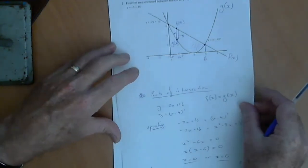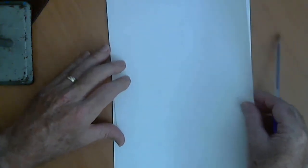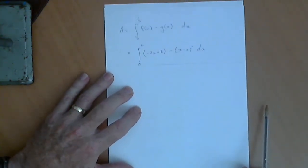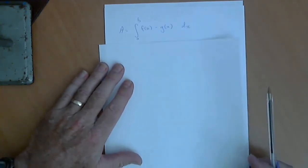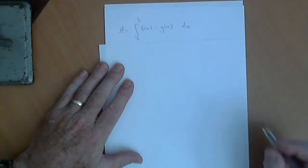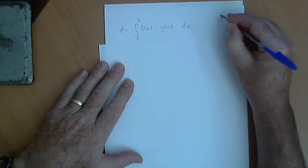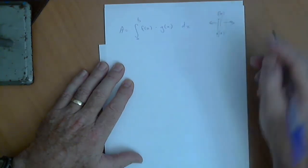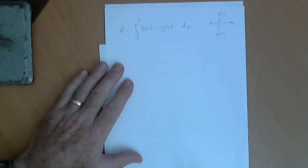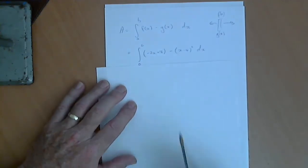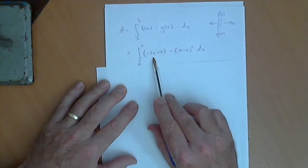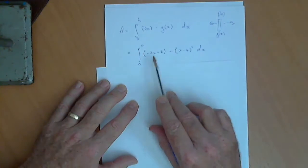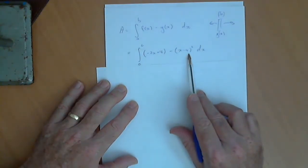Then, once we've done that, we can set up our integral to work out the area. Now, we said that we're going to do f of x minus g of x to work out the length of that little strip, because that's f of x up the top, g of x down the bottom, and we're going to integrate it between 0 and 6. So, substitute your function values in, f of x is minus 2x plus 16, g of x is x minus 4 squared.